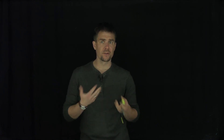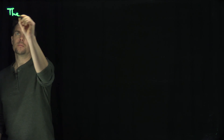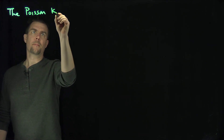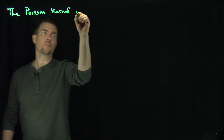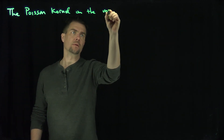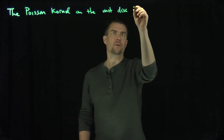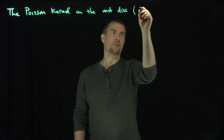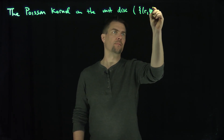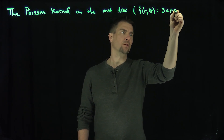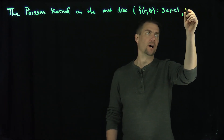Hello students. In this video we'll define the Poisson kernel on the unit disk. For our context, the unit disk is going to be the set of all points r and theta in polar coordinates such that r is between zero and one, and theta is between zero and two pi.